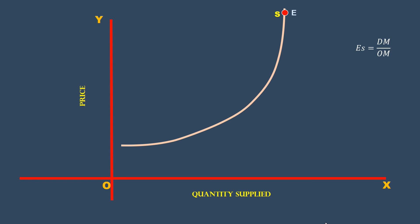At point E on the supply curve, the elasticity is zero. The tangent drawn to that point is vertical and parallel to y-axis. Hence, supply is perfectly inelastic at point E.